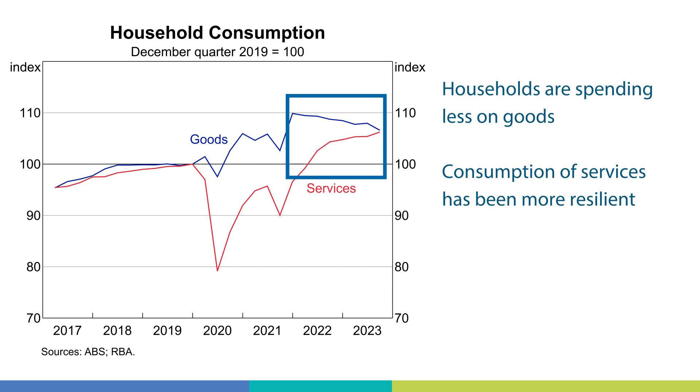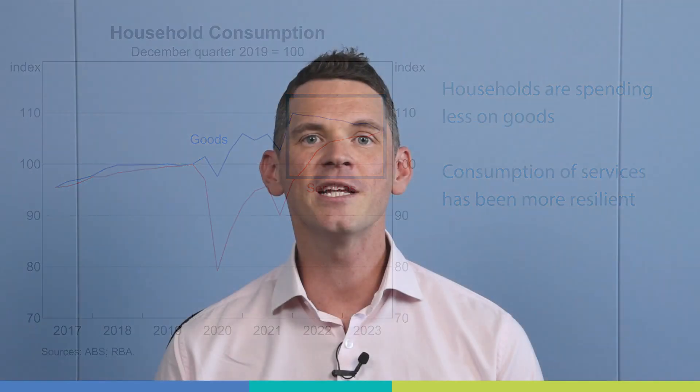Households have also responded by saving less and in some cases drawing down their stock of savings. While consumption has been the main driver of slower economic growth, there have been some other components of GDP that have partly offset this. These include strong growth in business investment, public sector spending and spending by international students and tourists, which make up part of our services exports.